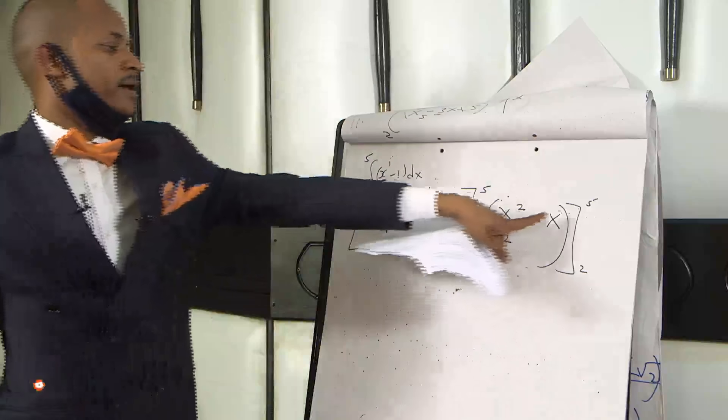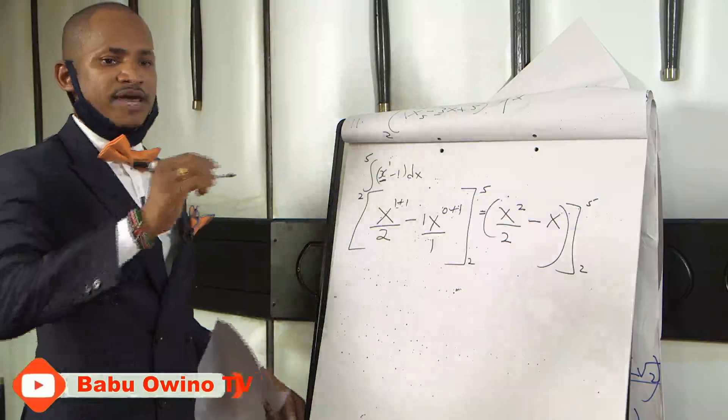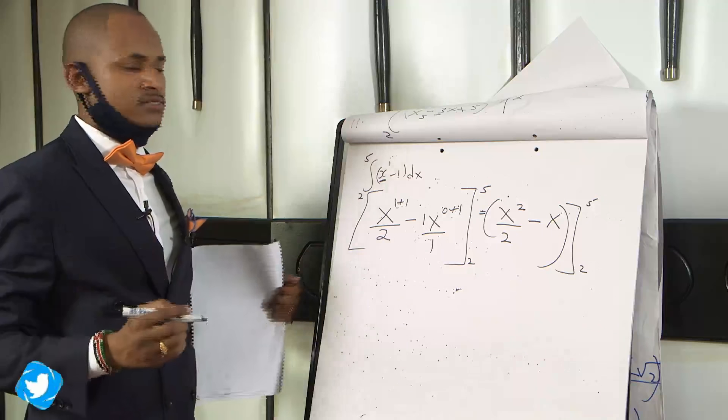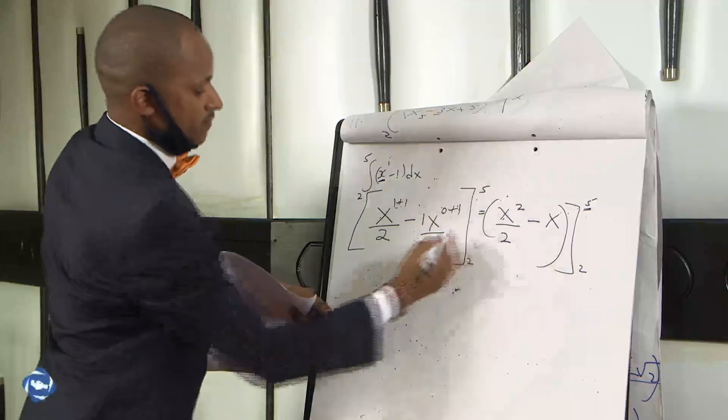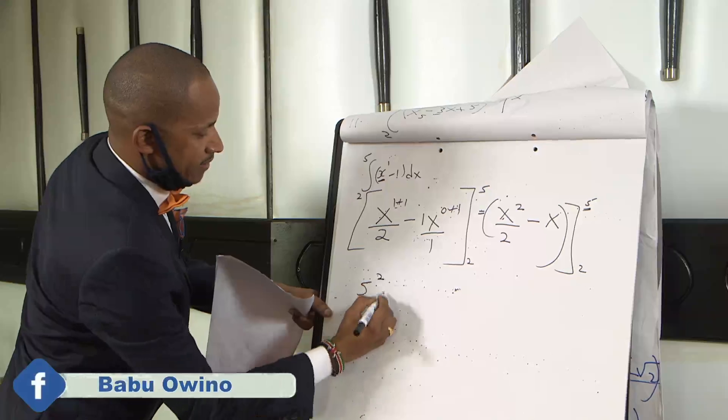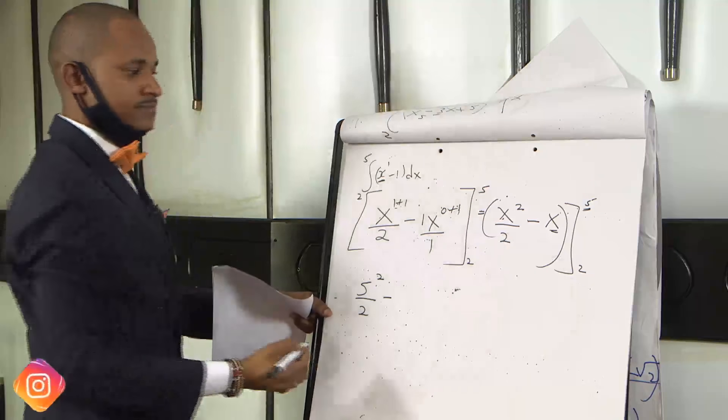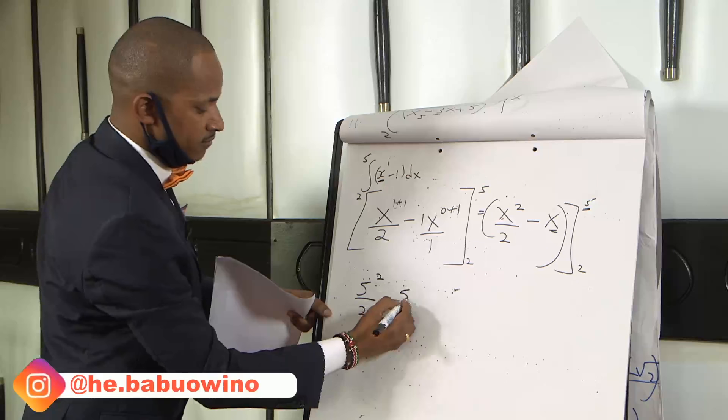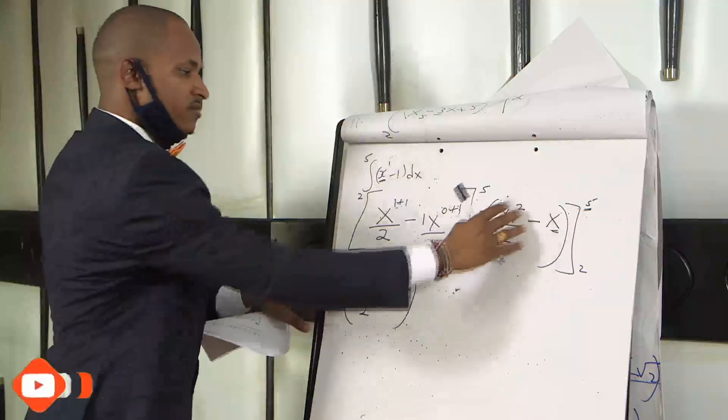So when you want to open this bracket to insert the limits, you simply where there is x, you start with the upper limits. Where there is x, you replace it with 5. So you say 5 squared divided by 2 minus x here is 5.